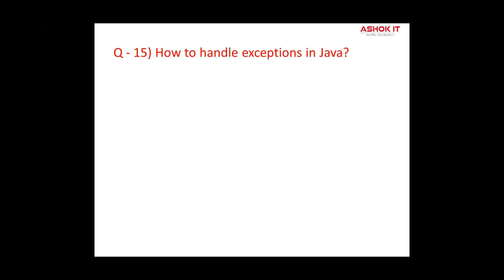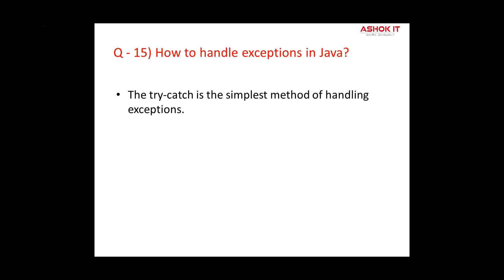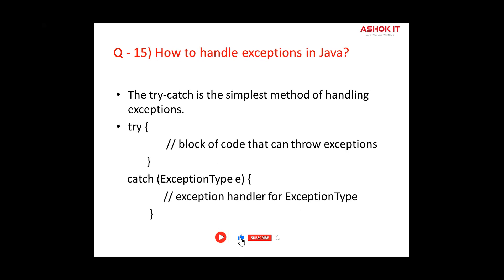Question fifteen: How to handle exceptions in Java? The try-catch block is the simplest method of handling exceptions. Put the code you want to run in the try block, and any exceptions thrown are caught by one or more catch blocks. The first catch block that handles the exception class or one of its superclasses will be executed. Make sure to catch the most specific class first.